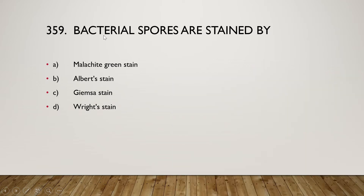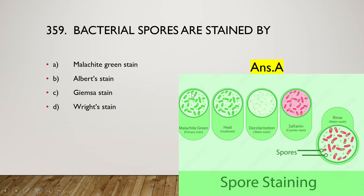Next: bacterial spores are stained by malachite green stain, Albert stain, Ziehl-Neelsen stain, or Wright stain? The right answer is option A, malachite green stain is used for bacterial spores. Malachite green is the primary stain, heat is used to fix them, water wash is used as decolorizer, and safranin is used as a counterstain. Spores appear the color of malachite green.